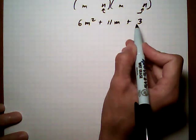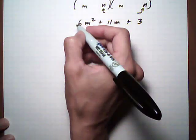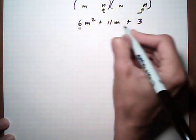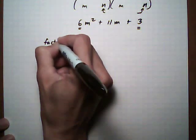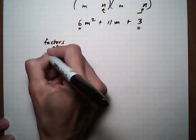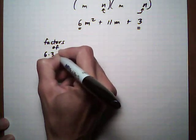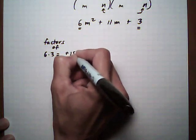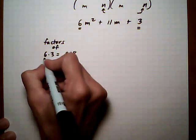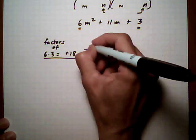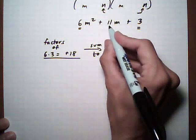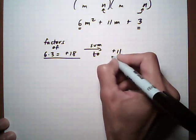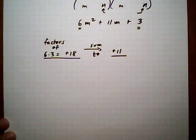And I'm going to use the factor by grouping method. So we look at factors of the first times the last term, factors of 6 times 3, and the signs are very important. All right, so factors of positive 18 that sum to the middle term. And in this case, positive 11. Again, the sign is really important.